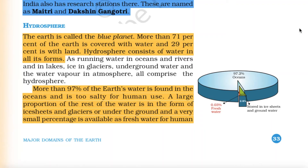Hydrosphere: The earth is called the blue planet. More than 71 percent of the earth is covered with water and 29 percent with land. Hydrosphere consists of water in all its forms — as running water in oceans, rivers and lakes; ice in glaciers; underground water; and water vapor in the atmosphere. More than 97 percent of the earth's water is found in the oceans and it is too salty for human use.